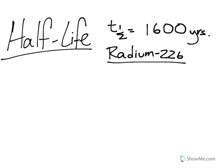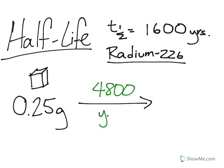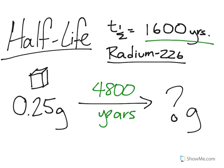Now let's start out. Let's say I have 0.25 grams of this radium-226. Let's try to come up with some kind of visual representation of this. What I want to know is, after about 4,800 years, how many grams of this radium-226 is left over, knowing that the half-life for this isotope is 1,600 years.